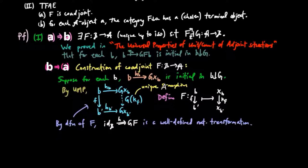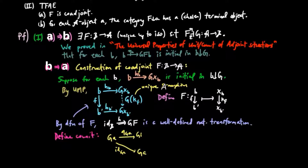We still need to define the counit e, and we do this on objects by using the universal mapping property of h. Note that the η_{ga} you see here should be an h_{ga}. In other words, we define e_a to be the unique morphism such that h_{ga} followed by g(e_a) is equal to the identity on ga. And then by the universal mapping property, we see that e is unique.